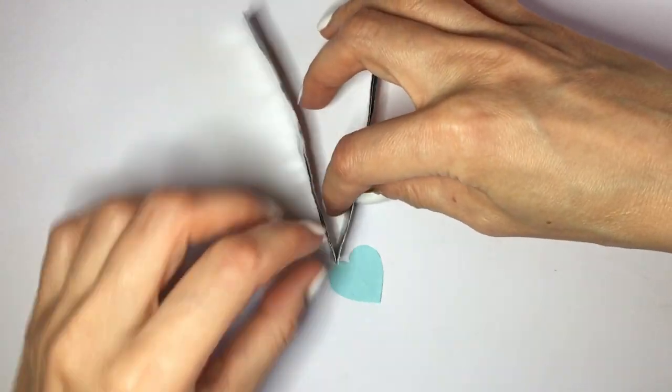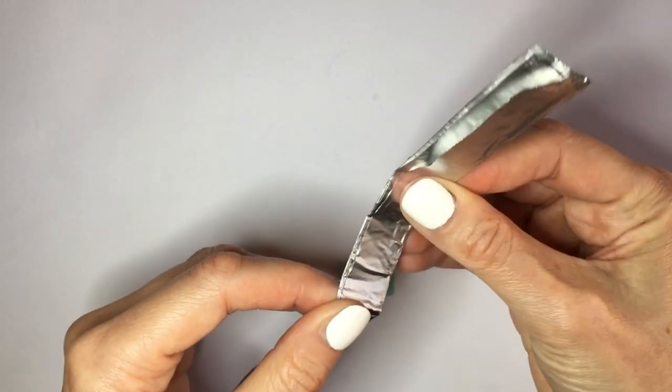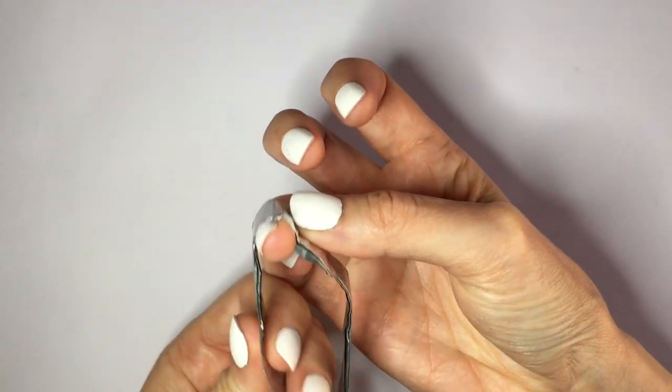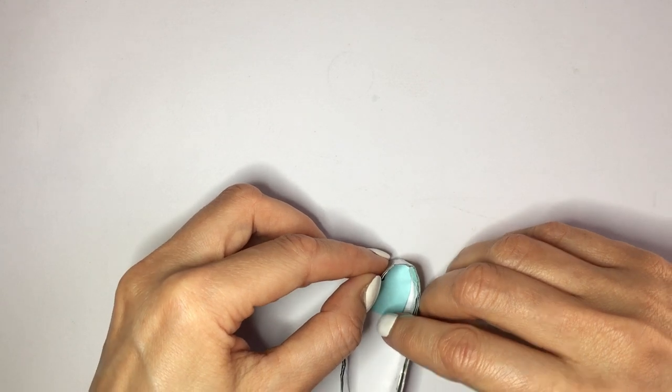Then for the round part of the heart, I'm going to be using my ring fingers and just wrapping that around my finger like that. Then I'm going to be working on that part of the heart.